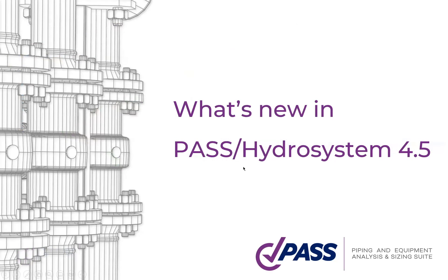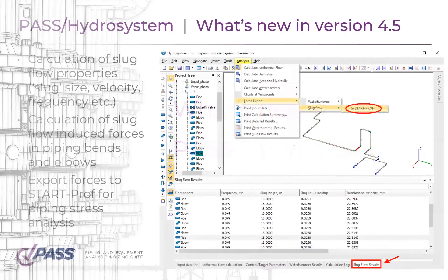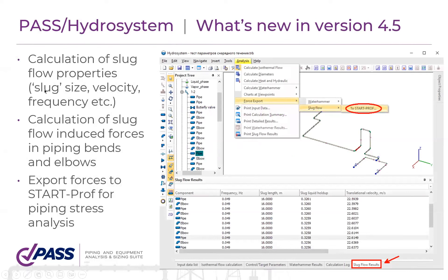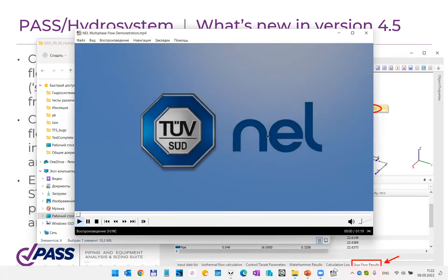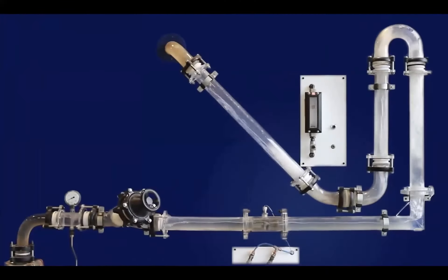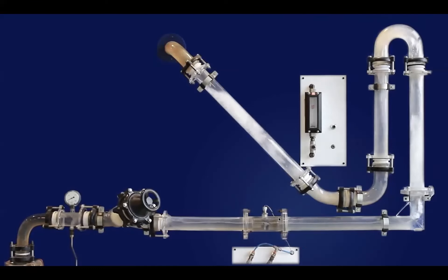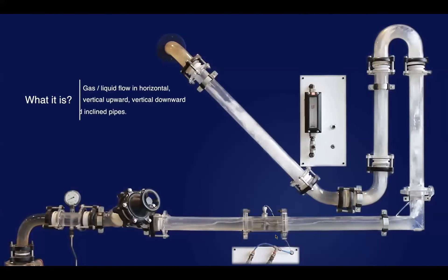Now let's talk about what's new in PASS Hydra System version 4.5. The major new key feature is the calculation of slug flow properties — two-phase slug flow properties inside piping systems. Slug flow is when you have gas and liquid flowing inside piping with interchange between gas and liquid. Looking at this horizontal pipe at reduced speed, it may initially appear to be separated or stratified flow with gas at the top and liquid at the bottom.